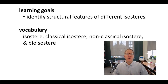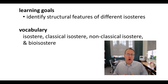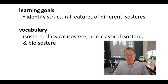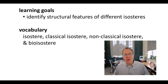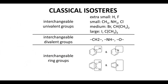Let's discuss this concept called isosteres. Isosteres are parts of molecules that can be interchanged with one another and yet have a minimal impact on the potency of the molecule. On the screen are a series of functional groups that can often be exchanged on a lead with very little impact on the lead's potency. These functional groups are called isosteres.